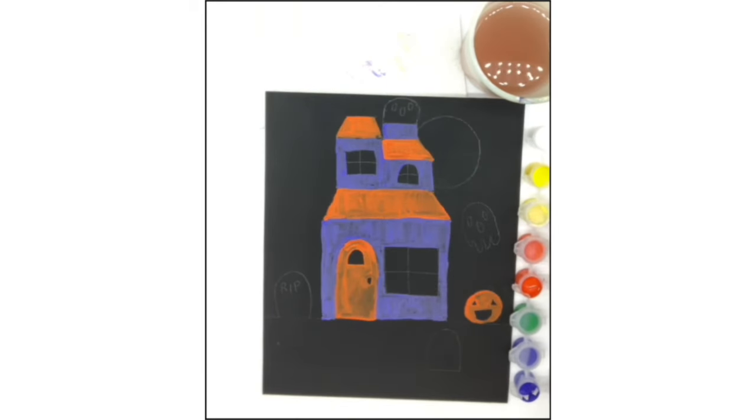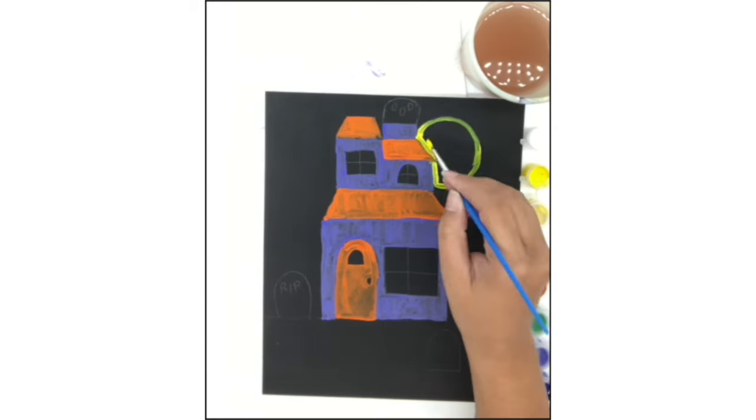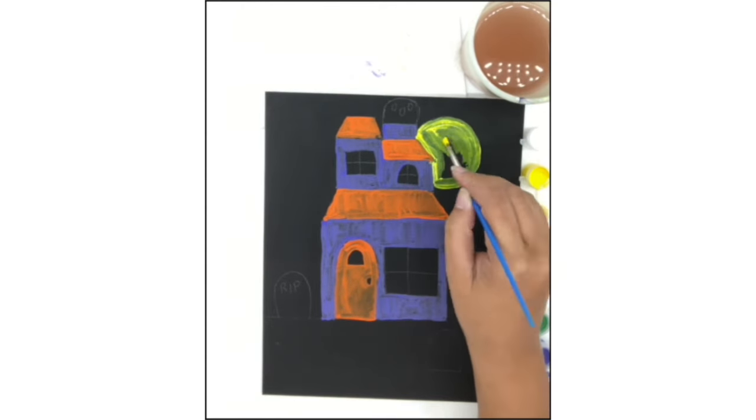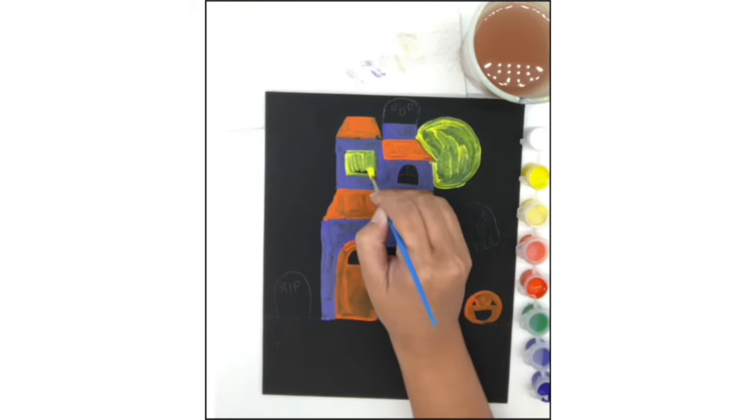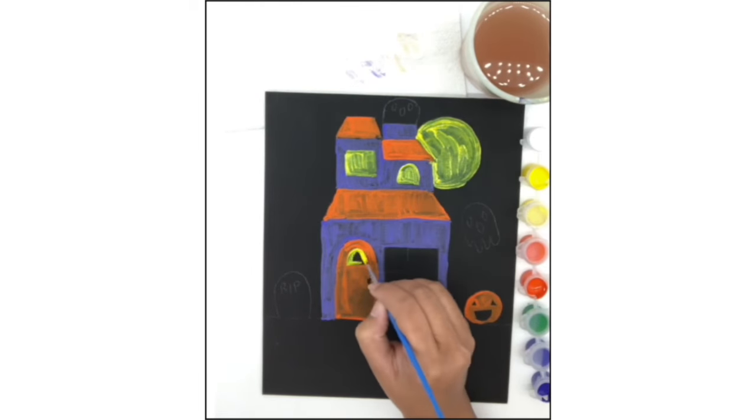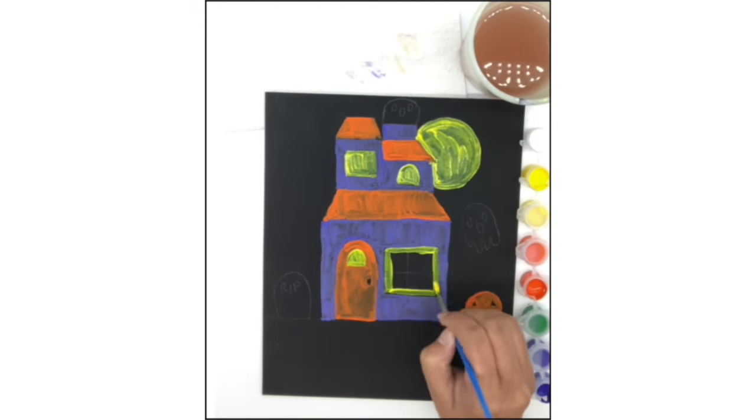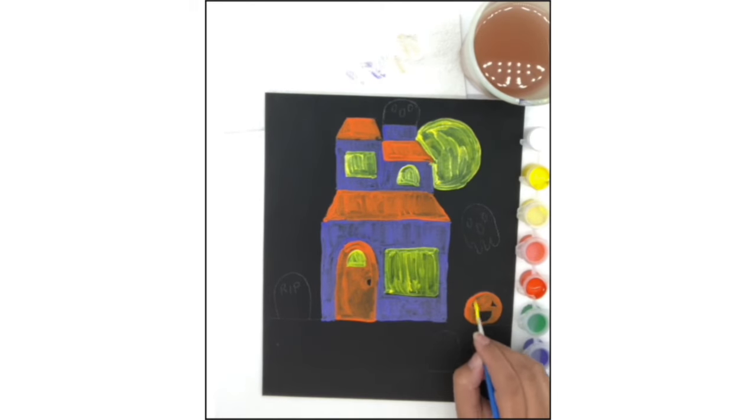Next, use yellow for the windows and for the moon. Paint the jack-o-lantern too.